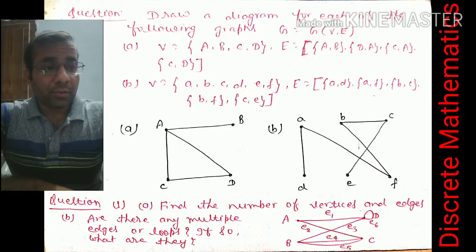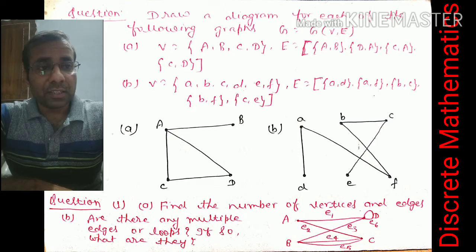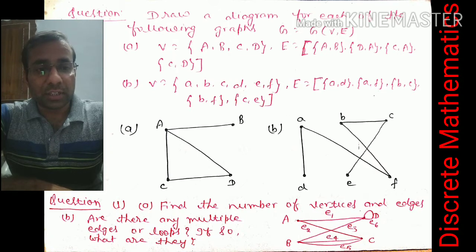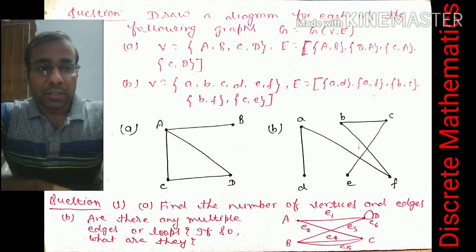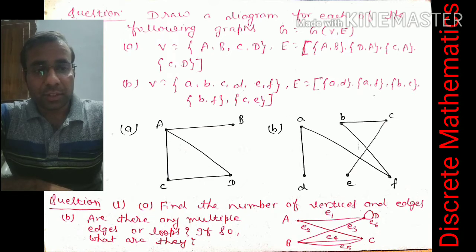In the first graph, we have not connected B to C because that edge is not given in part (a). Similarly in part (b), A is not connected to B, C, or E, but A is connected to D and F because those edges are specified. Only the listed edges are drawn.